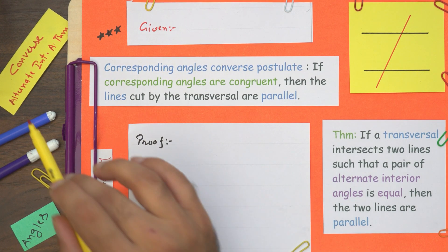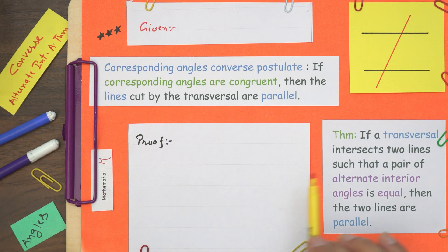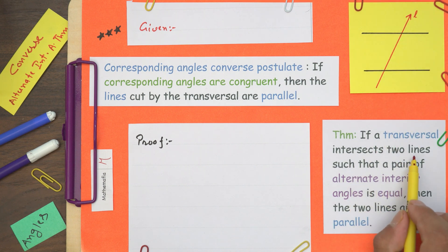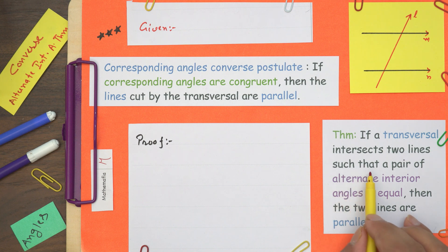In this tutorial, we will prove the converse of the alternate interior angle theorem, which states: if a transversal L intersects two lines M and N such that a pair of alternate interior angles is equal, or more precisely congruent, then the two lines are parallel.